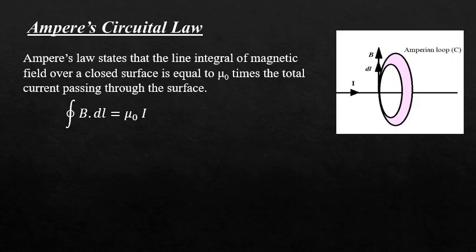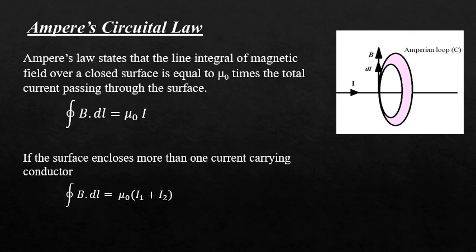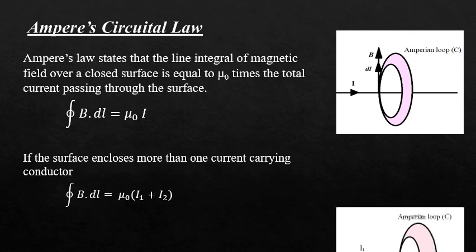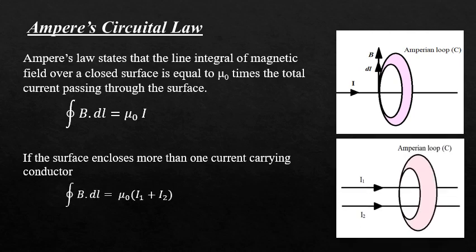As shown in the diagram, the current carrying conductor is enclosed by a surface called an Ampere's Circuital loop. The magnetic field is tangential to the surface of the loop. If the surface encloses more than one current carrying conductor, then the total current is the sum of the individual currents, as seen in the diagram.